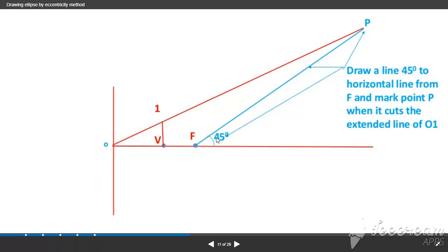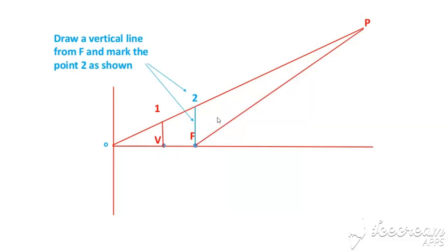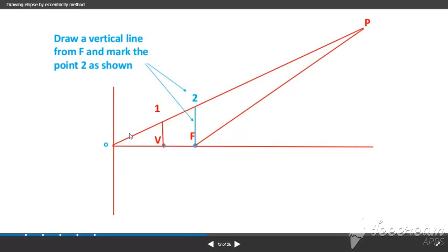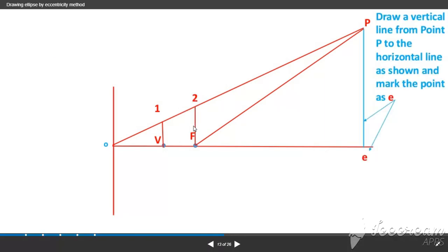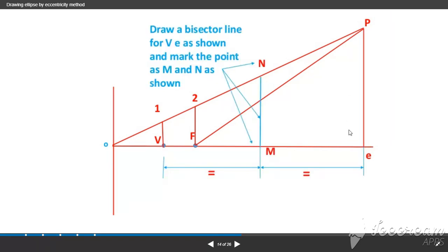Here is 45 degrees. Extend this line which intersects the O1 line. Draw the vertical line from F and mark point 2 as shown. And mark point E. Join this line. Draw the bisector line for VE as shown and mark point MN.